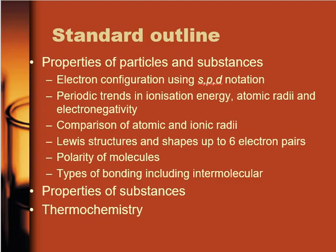We're going to look at how we compare atomic and ionic radii. We are going to consider Lewis diagrams and shapes for molecules with up to six pairs of electrons around the central atom. We're going to look at the polarity of those different molecules and a range of different types of bonding, including different types of intermolecular bonding, which is a bit of a change from year 12.